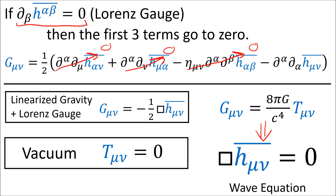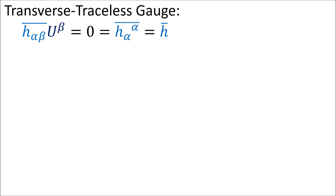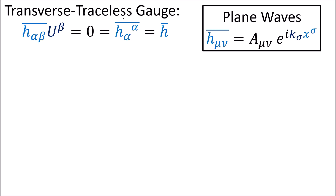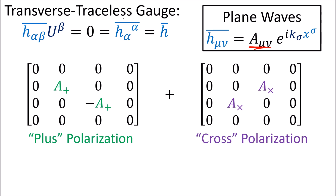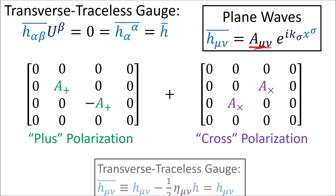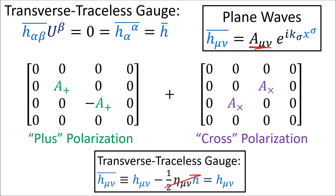So gravitational waves are small deviations away from flat spacetime that travel at the speed of light c. Then we introduced the transverse traceless gauge coordinate system, where there are only two independent components of the metric perturbation h-bar, which are the plus and cross polarizations of gravitational waves. In this coordinate system, h and h-bar are equal since their trace goes to zero.